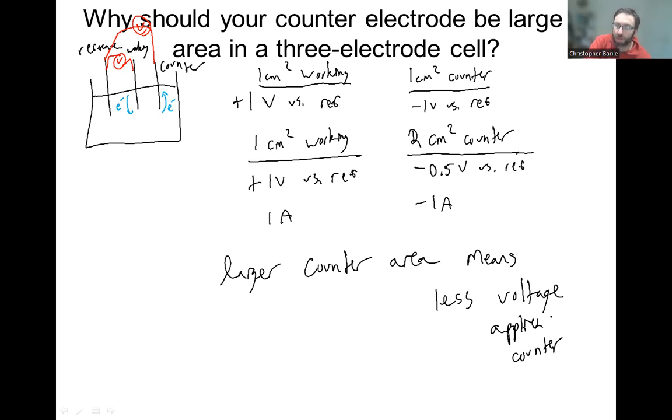And in the case where the counter electrode area is way higher, 10 or a hundred times higher than your working electrode area, your counter electrode voltage will be so low that it actually can be accommodated by non-Faradaic processes. And so non-Faradaic processes, another word for those, right, is capacitive processes.